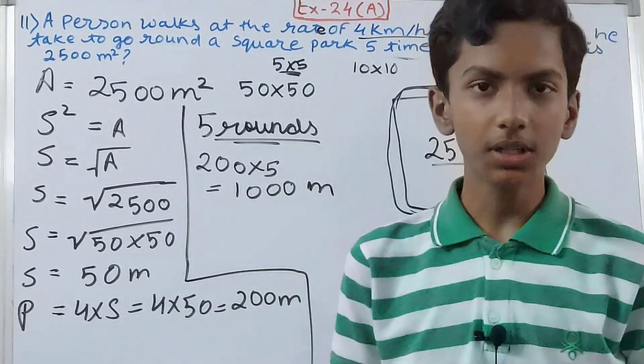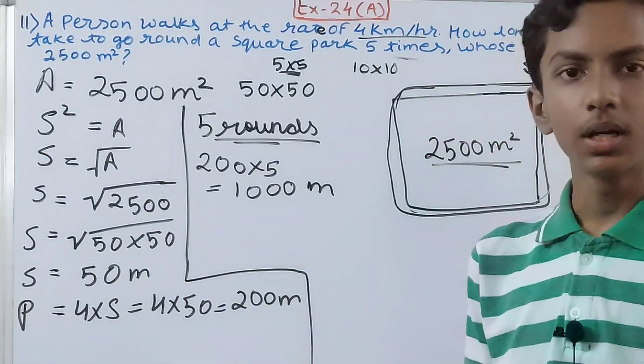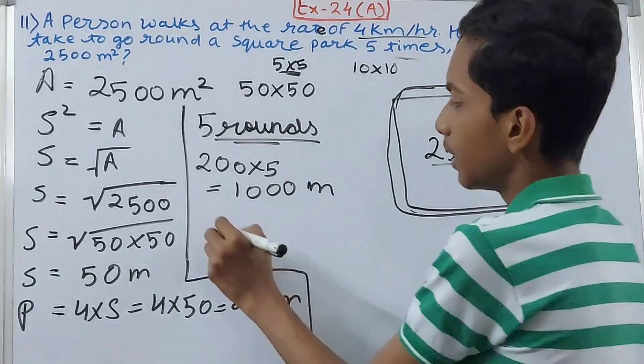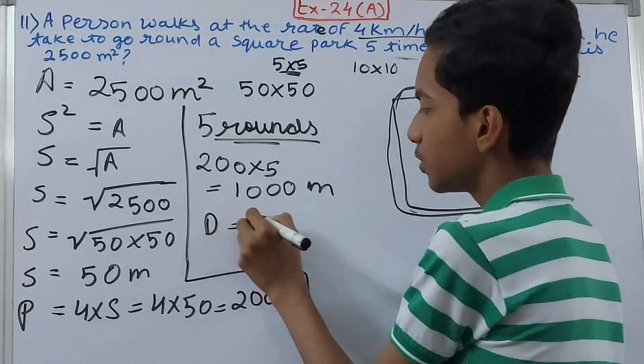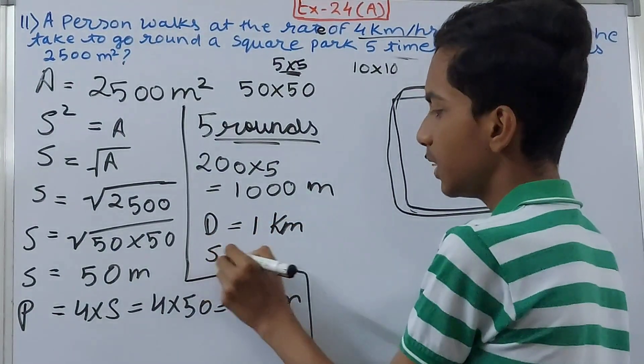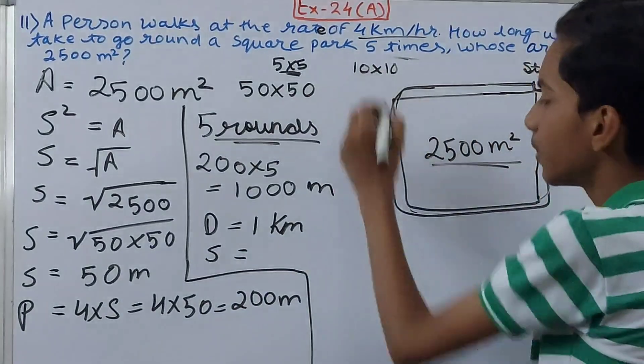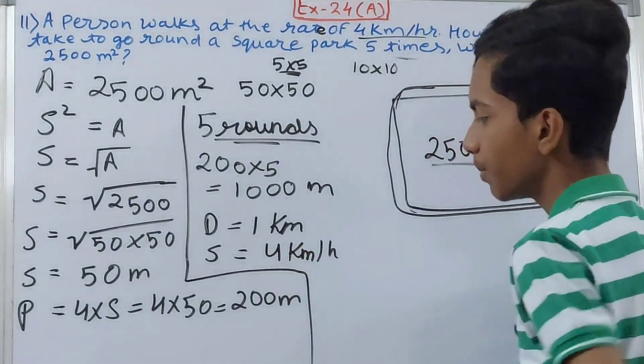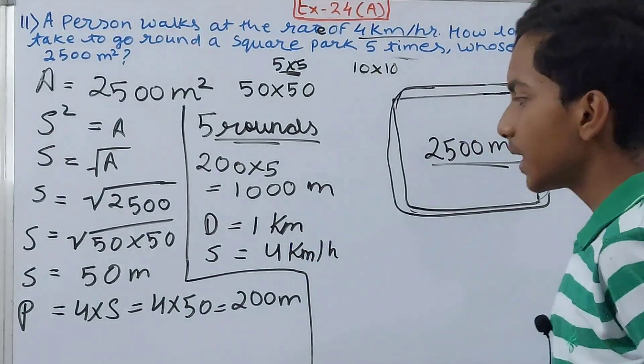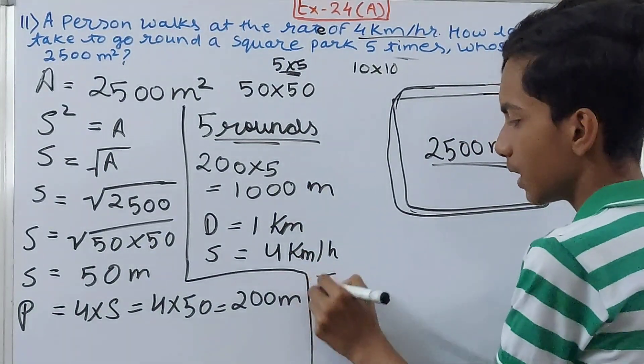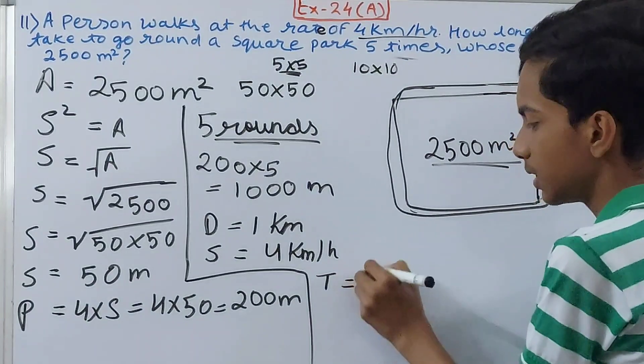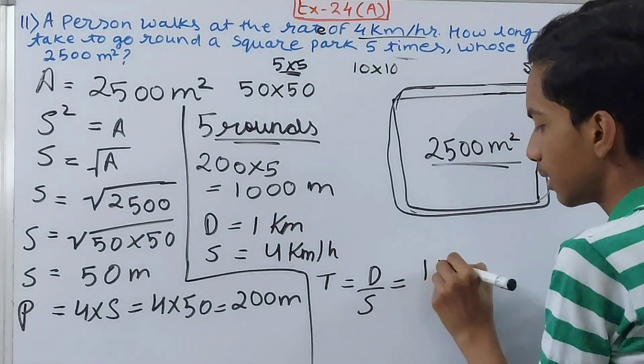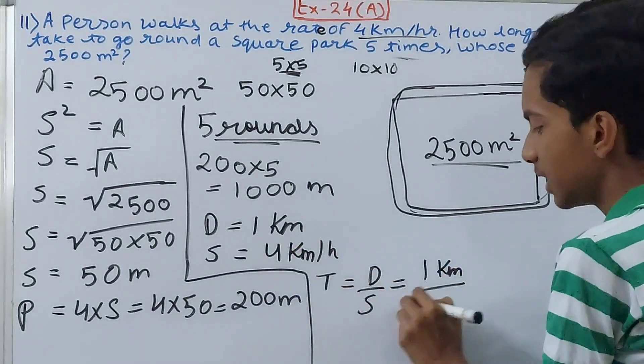We have studied speed, time, and distance, so we know how to calculate time. Time equals distance upon speed. Distance is 1 kilometer, and speed is 4 kilometers per hour.